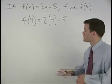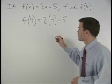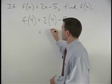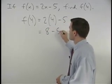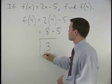Now all we have to do is simplify on the right side. 2 times 4 is 8, so we have 8 minus 5, which is 3.